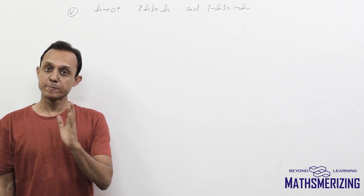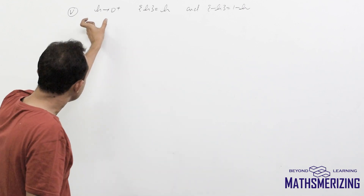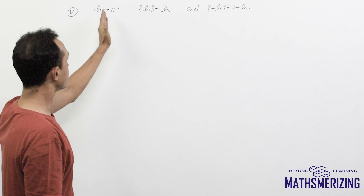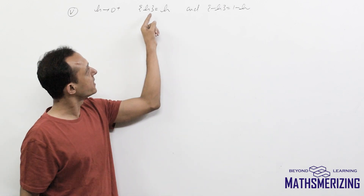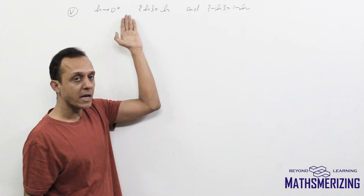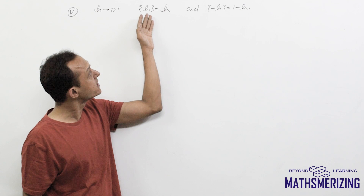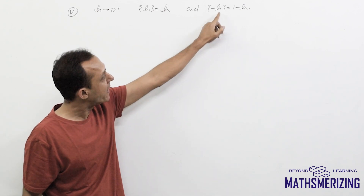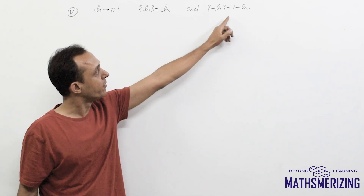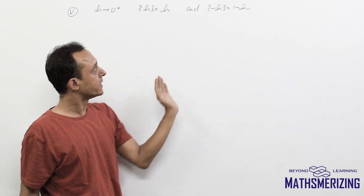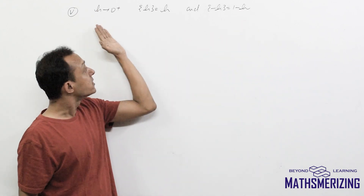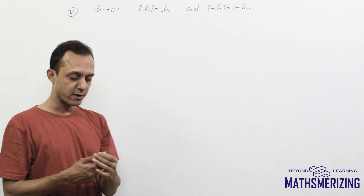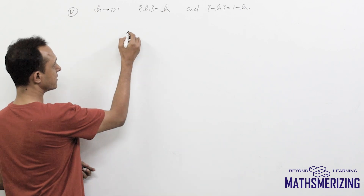The fifth property: if h is a very small positive number nearly equal to zero, then {h} = h (since h already lies between 0 and 1). And {−h} = 1 − h. We use this property when solving limit problems.